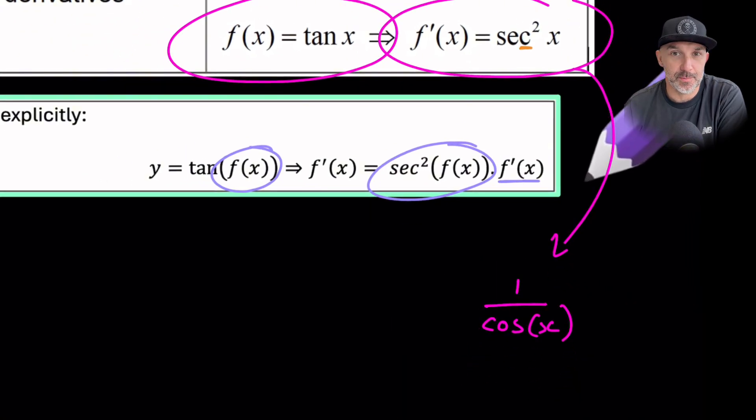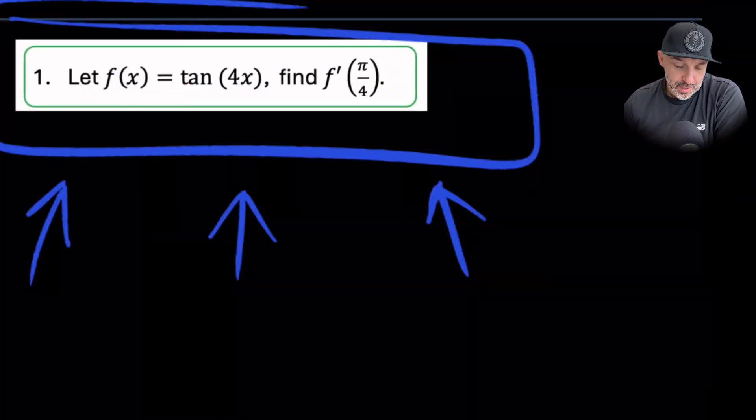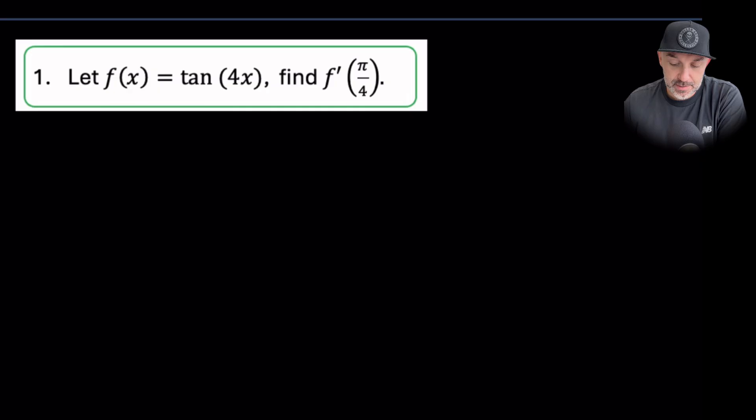We will see that in the following problems. Question 1, let f of x equal tan 4x, find the derivative of f and then substitute pi over 4, which is 45 degrees.